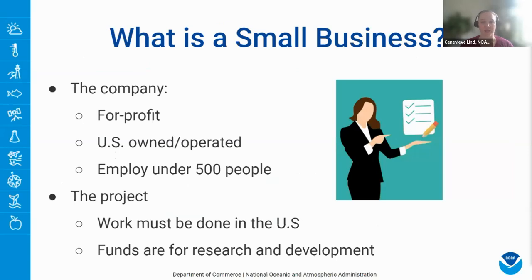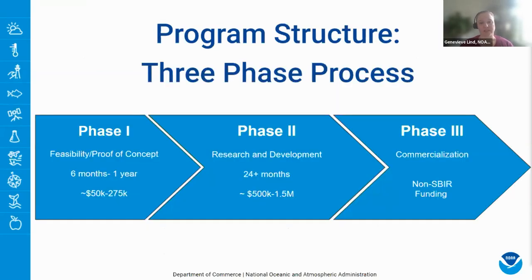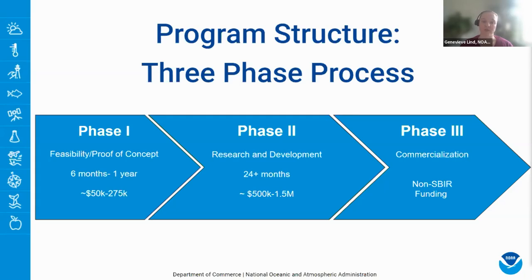The project must be done in the United States, and funds are for research and development. The SBIR and STTR programs are structured in three phases. Phase one is generally for feasibility or proof-of-concept work, lasting six months to one year depending on the agency, with awards ranging from $50,000 to $270,000. Phase two supports further R&D for 24 or more months, with award amounts between $500,000 and $1.5 million. The objective for phase three is for small businesses to pursue commercialization objectives resulting from phase one and two R&D activities, but phase three is not funded through SBIR funding.